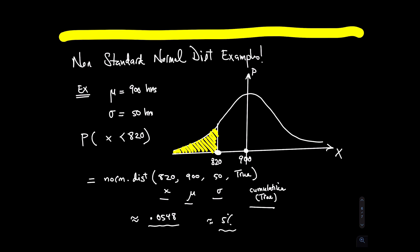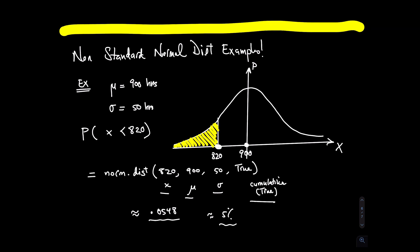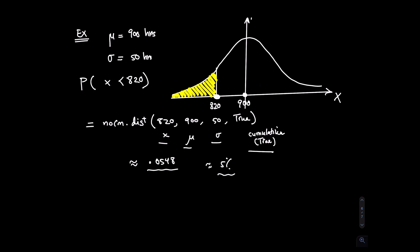A probability of 0.0548, which is almost 5%, means the light bulb will almost certainly last more than 820 hours. That's how you calculate that. Let's move on to another example — this time dealing with volumes of soda in quart soda bottles, which are normally distributed. The mean is 32.3 and the standard deviation is 1.2. Again, these are all non-standard normal distribution forward problems.